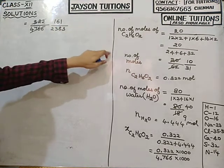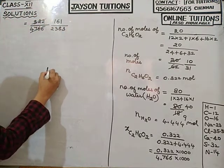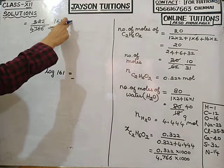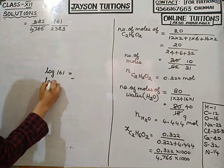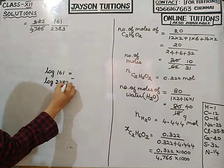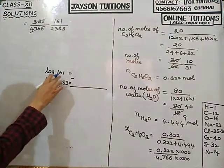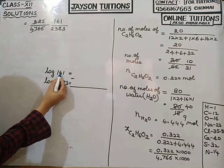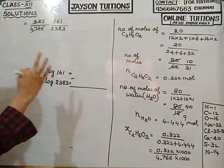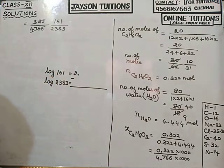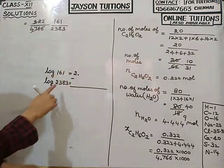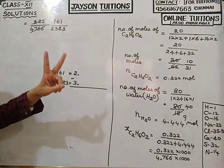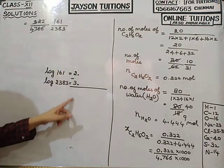To find log of 161: it has 3 digits, so I keep 2 before the decimal point. In the logarithm table, I look in the 16th row, first column, and get 2068. The rule is: for 3-digit numbers keep 2 points, 4-digit keep 3, 5-digit keep 4, 2-digit keep 1, 1-digit keep 0.